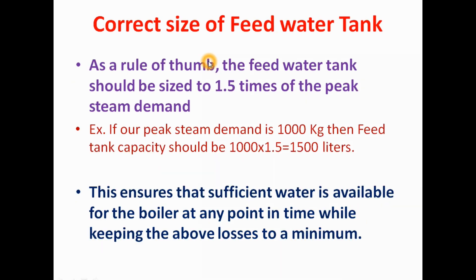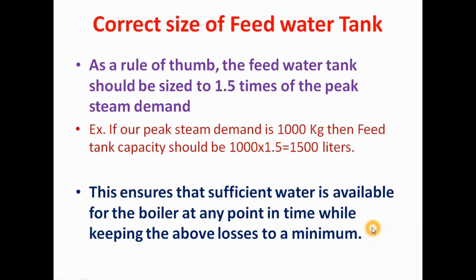Now we will see how to design the correct size of a feed water tank. As a thumb rule, the feed water tank should be 1.5 times the peak steam demand. For example, if peak steam demand is 1000 kg per hour, then the feed water tank capacity should be 1.5 × 1000 = 1500 kg. Using this thumb rule ensures sufficient water is available for the boiler at any point in time while keeping losses to a minimum.